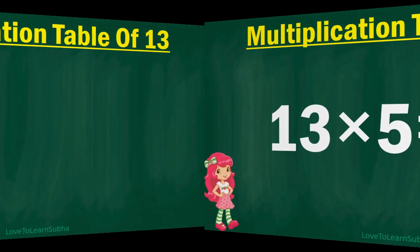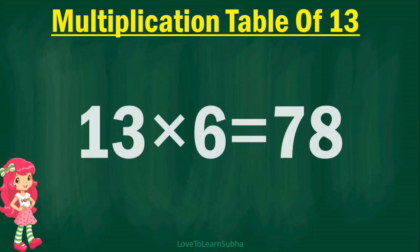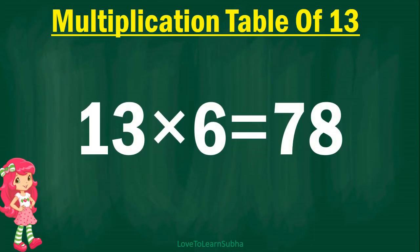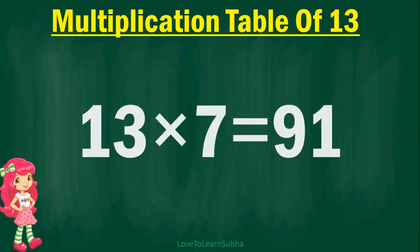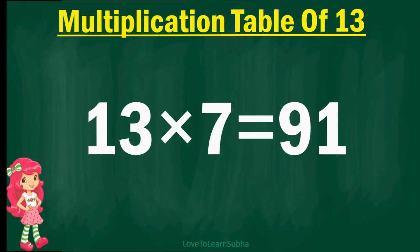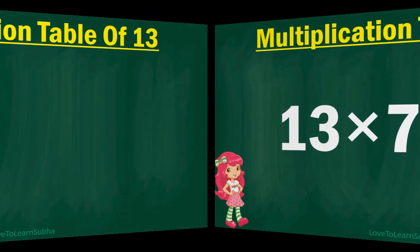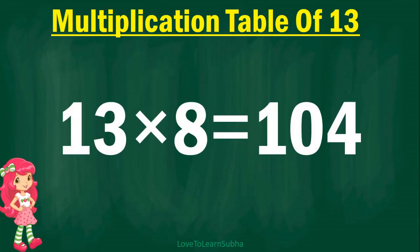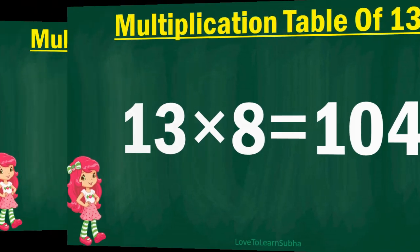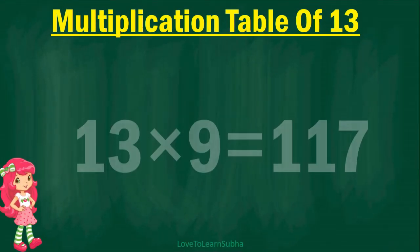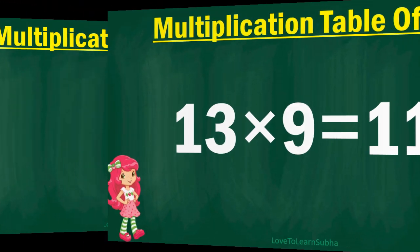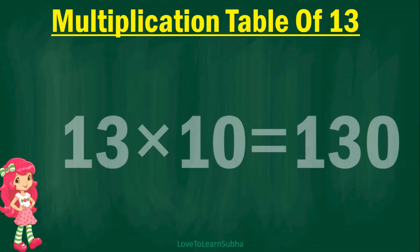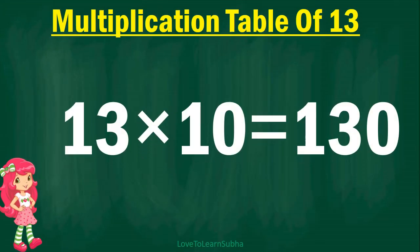13 sixes are 78, 13 sevens are 91, 13 eights are 104, 13 nines are 117, 13 tens are 130.